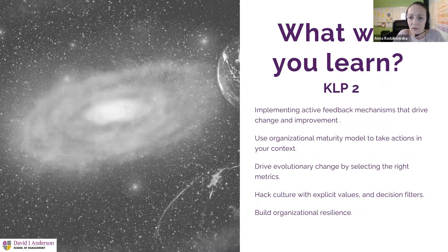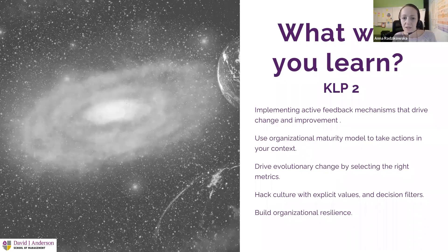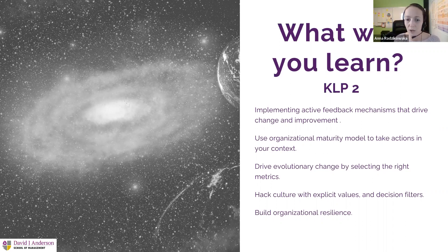In KLP Part 2, we look at the theoretical content from Part 1 in a more actionable way. You'll learn how to implement active feedback mechanisms that drive change and improvement, how to use the organizational maturity model to take actions in your context, how to drive evolutionary change by selecting the right metrics, building meaningful closed feedback loops, how to hack culture with explicit values and decision filters, and how to build organizational resilience.